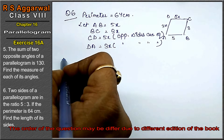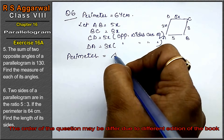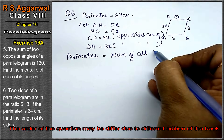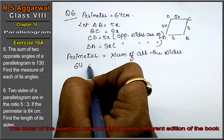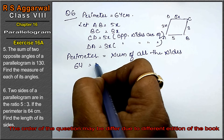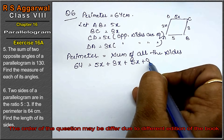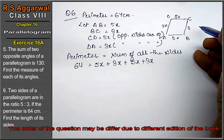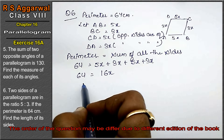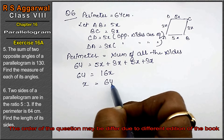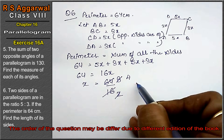We know the perimeter formula: perimeter equals sum of all sides. So perimeter equals 64, which equals AB plus BC plus CD plus DA. Since opposite sides are equal, this becomes 5x plus 3x plus 5x plus 3x equals 16x. So 16x equals 64, and x equals 4 cm.